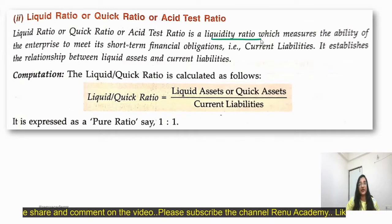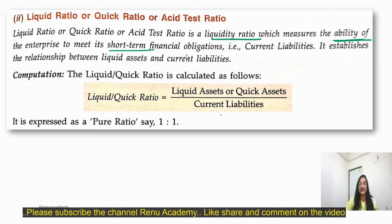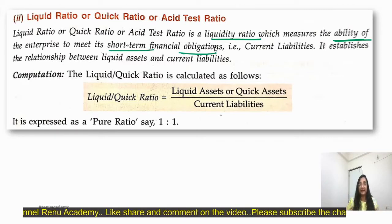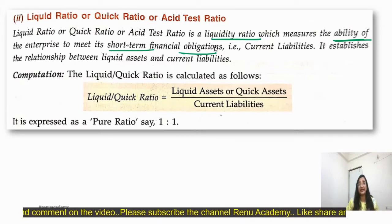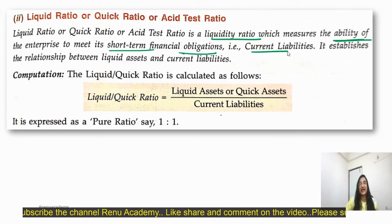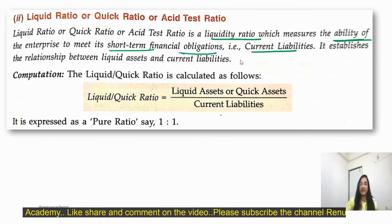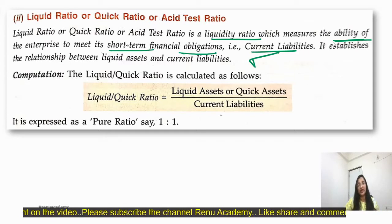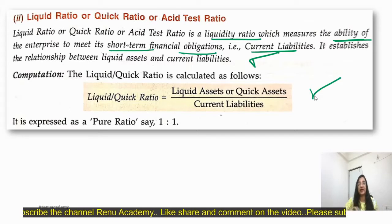What is liquidity ratio? It measures the ability of the enterprise to meet its short-term financial obligations. We have to calculate the liquidity ratio in relation to current liabilities. It stabilizes the relationship between the liquid assets and the current liability. The formula is: liquid asset or quick asset divided by current liability.